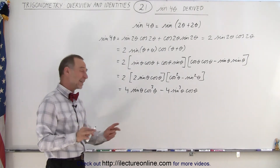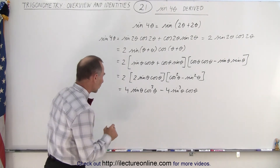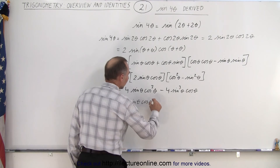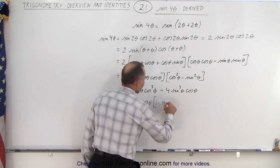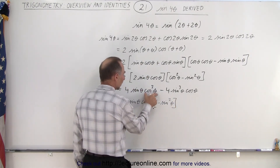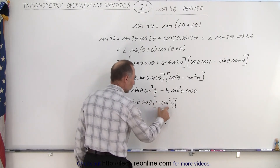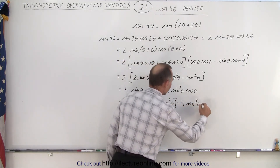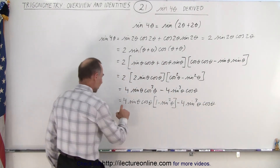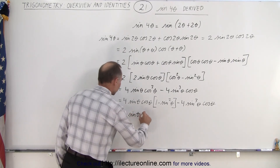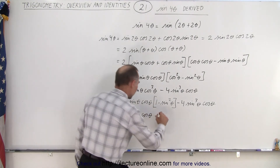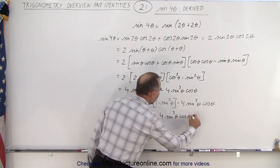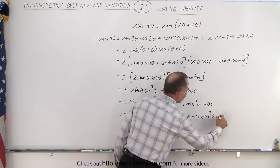We could leave it like this, or we could do a little mathematical trick. We're going to replace the cosine squared term. This can be written as 4 times the sine of theta times the cosine of theta times the cosine squared of theta, which can be written as 1 minus the sine squared of theta. So I took the cosine cubed of theta and wrote it as a product of cosine of theta times cosine squared of theta, rewritten as 1 minus sine squared of theta. This remains as minus 4 times the sine cubed of theta times the cosine of theta. When I multiply this out, I get 4 times sine of theta times cosine of theta, minus 4 times sine cubed of theta times cosine of theta, minus 4 times sine cubed of theta times cosine of theta.